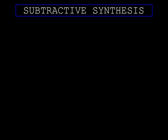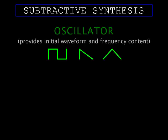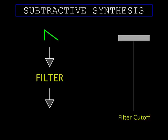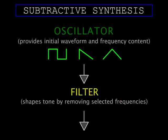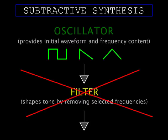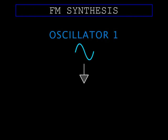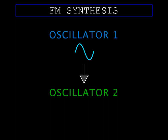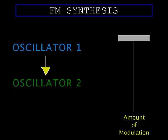Most keyboards implement subtractive synthesis. Oscillators have multiple waveforms, each with different harmonic content, and you change tone with filters that subtract a portion of those frequencies. FM doesn't need a filter to edit tone. Modulation between simple oscillators builds complex frequencies from the ground up. Instead of controlling tone with filters, you control tone with modulation.